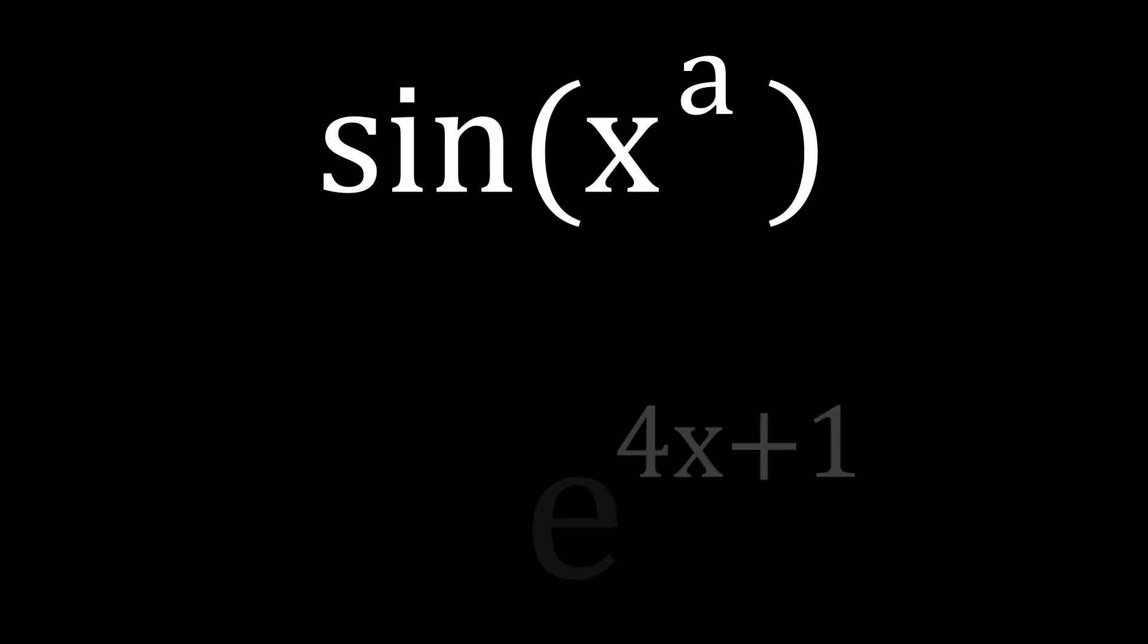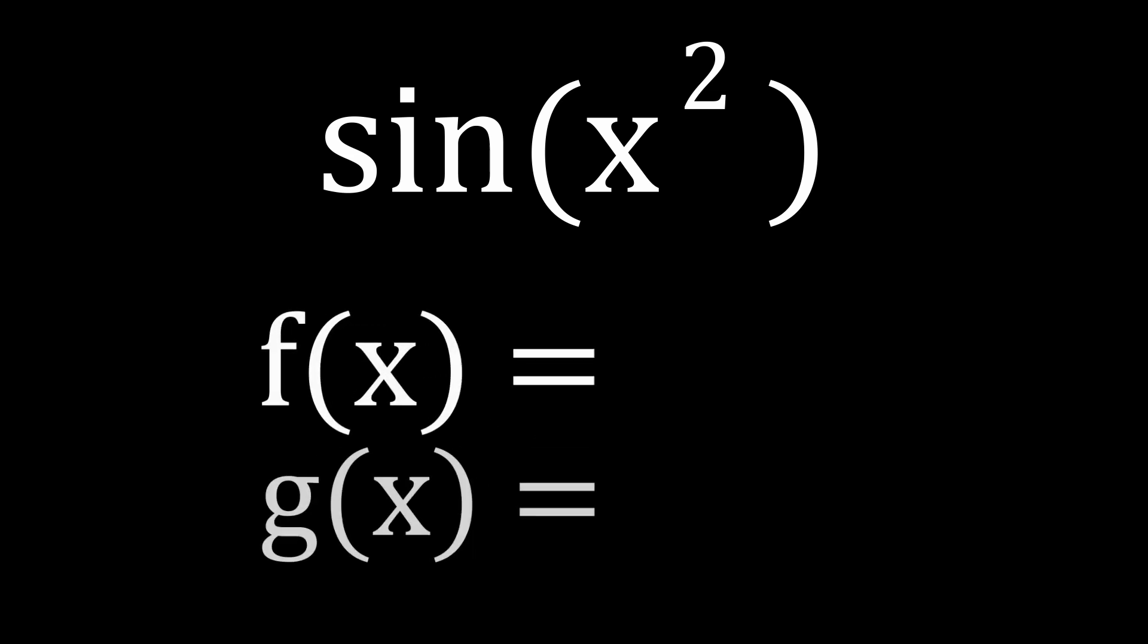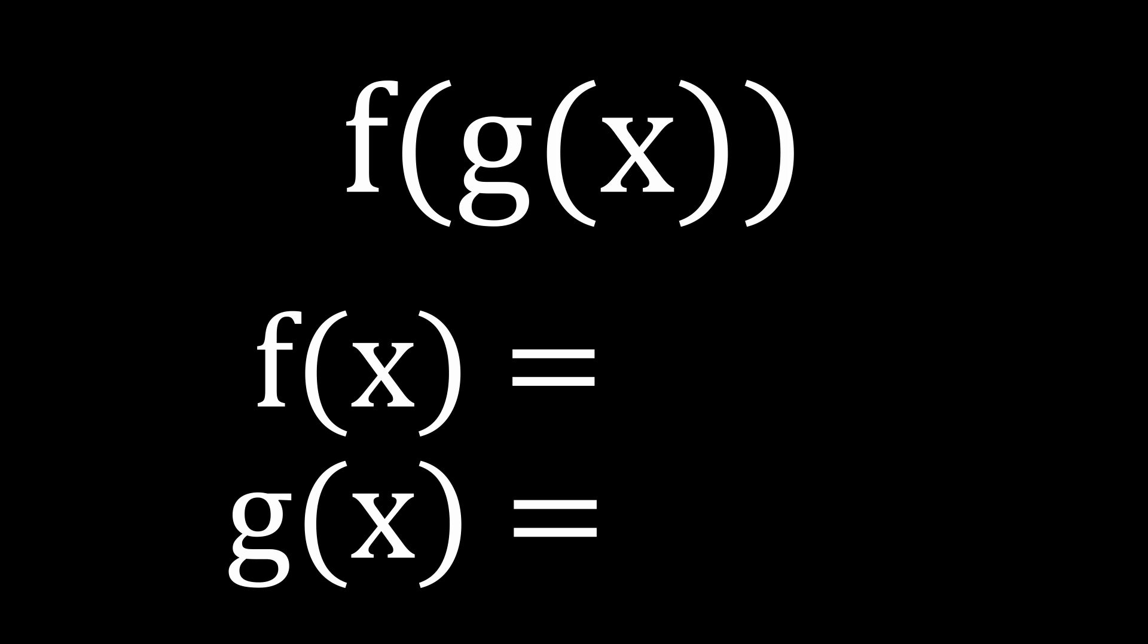Let's take the sine of x squared. How do we find this derivative? If we split this function into two other functions in the form of f of g(x), what does f(x) and g(x) equal? Well, g(x) would obviously equal x squared, and f(x) would equal the sine of x.